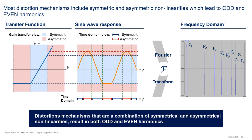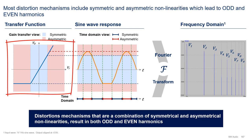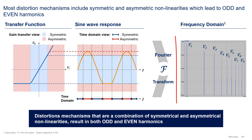In practice, most distortions are a combination of symmetric and asymmetric non-linearities, which lead to both odd and even harmonics. For example, a non-linearity that only clips the signal on one side — like a half-wave saturation non-linearity — has both symmetric and asymmetric properties. As a result, it creates a full set of harmonics, both even and odd.